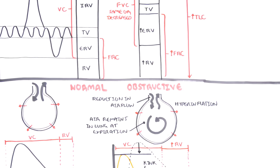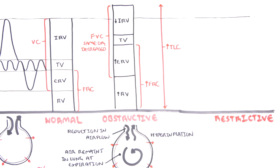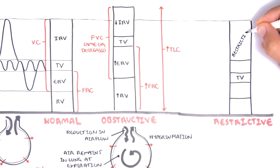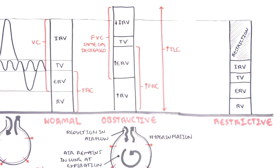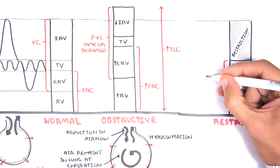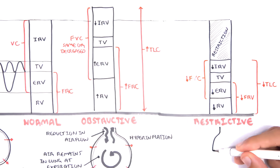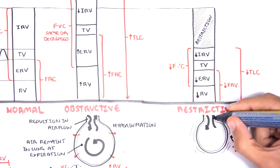Finally, let's look at restrictive lung disease, which includes conditions such as pneumoconiosis and sarcoidosis. In restrictive lung disease, fibrosis in the lungs impairs lung compliance. The tidal volume remains the same, but the inspiratory reserve volume, expiratory reserve volume, and residual volume are all reduced. Thus the forced vital capacity is reduced, the functional residual capacity is reduced, and the total lung capacity is reduced. This is because pulmonary fibrosis causes stiffness and restriction, leading to reduction in lung volumes and capacities.